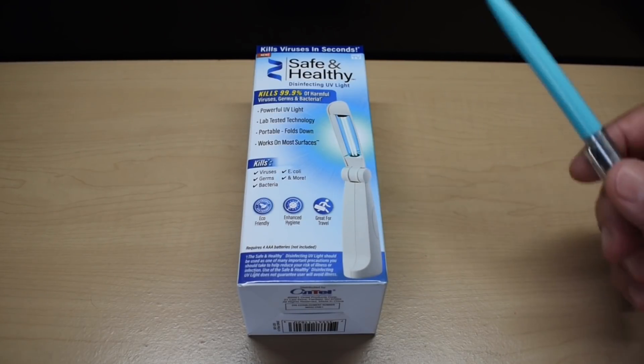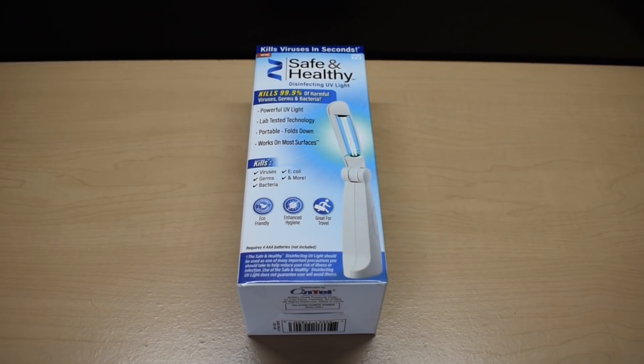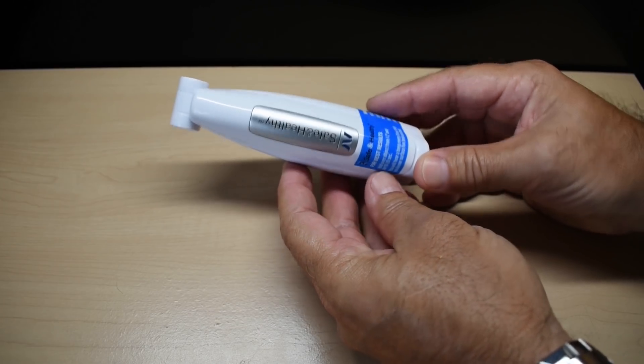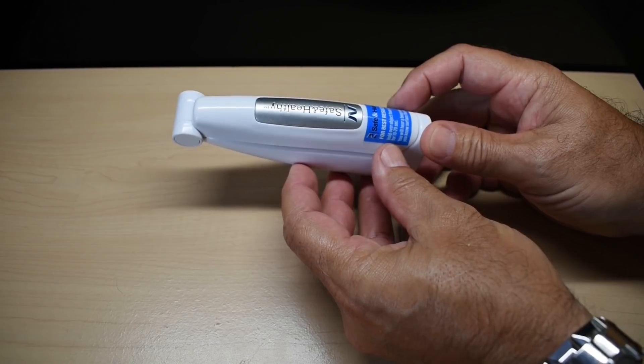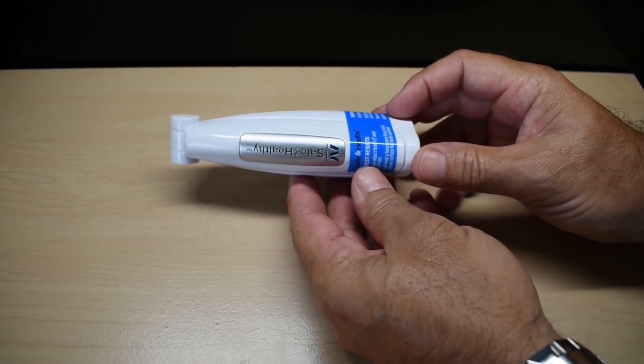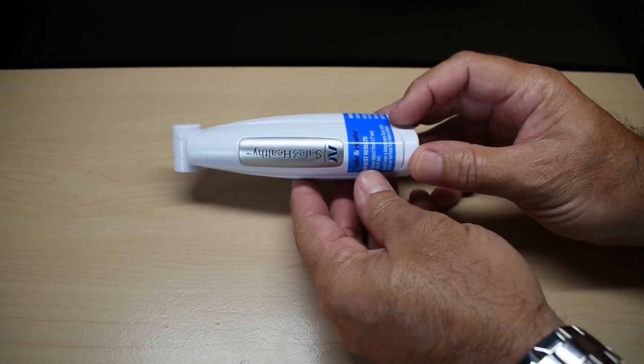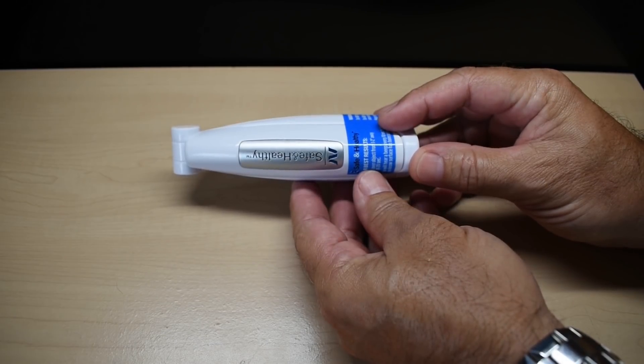First let's take a look at the unmodified UVC wand. Best results hold one to two inches away, ten to twenty seconds, and the good thing about this unit, it's going to beep every ten seconds, so you'll know how long the exposure is when you use this to treat the water.